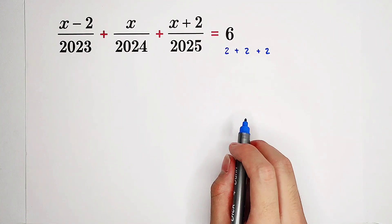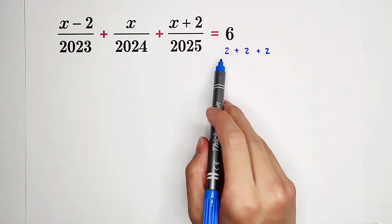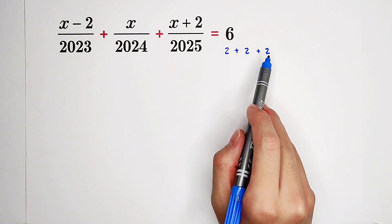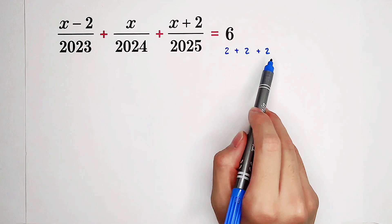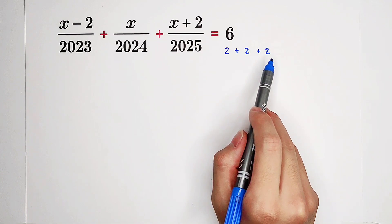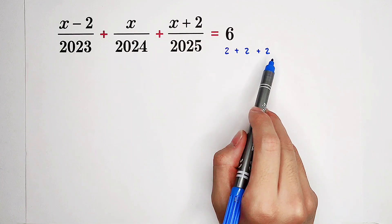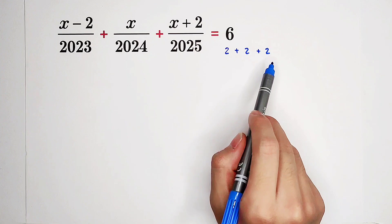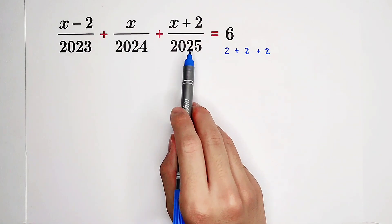And it can be separated into three twos. And our left-hand side has just three terms. Wow. So what can we do? We can give each term a two.